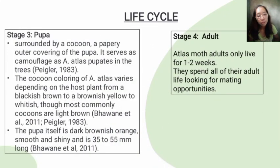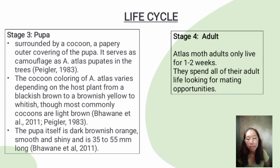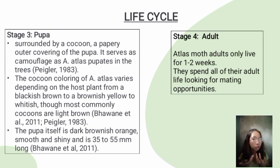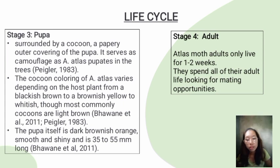Stage 3 is the pupa. It is surrounded by a cocoon — a papery outer covering that serves as camouflage, as Atacus atlas pupates in trees. Cocoon coloring varies depending on the host plant, from blackish brown to brownish yellow, serving as a defensive mechanism during the pupal stage. The pupa itself is dark brownish orange, smooth and shiny, and is 35 to 55 millimeters long.